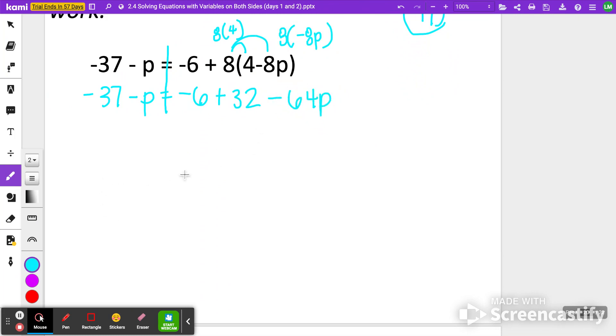Okay. Look for anything you can combine. Negative 6 plus 32 is a 26. So I have 26 minus 64p on the right side and negative 37 minus p on the left side. Then I'm going to start to move my variables. I want my variables to be here on the left. So let's do it.